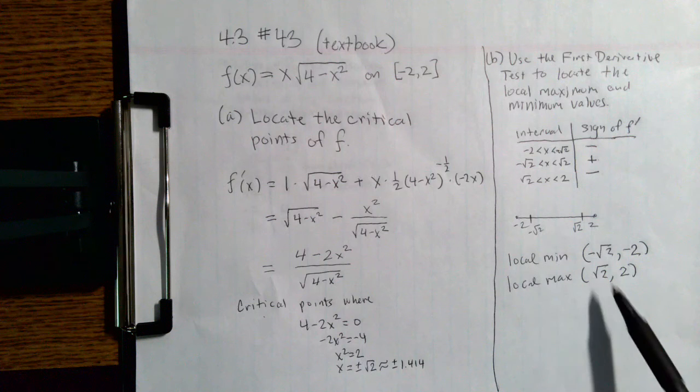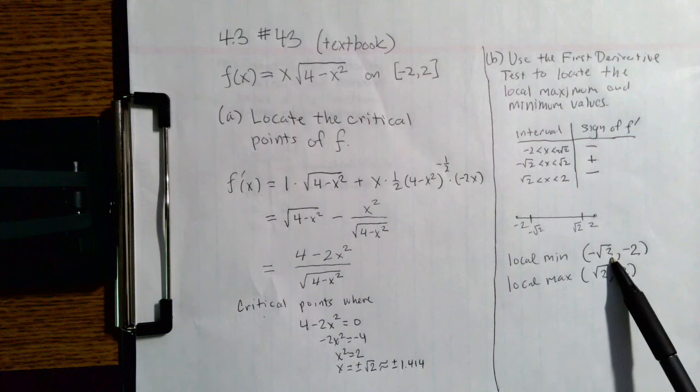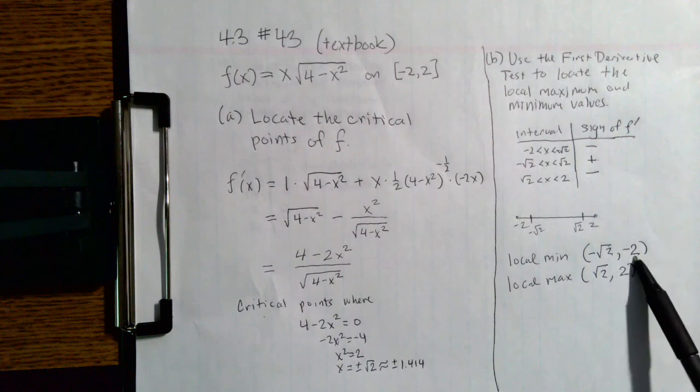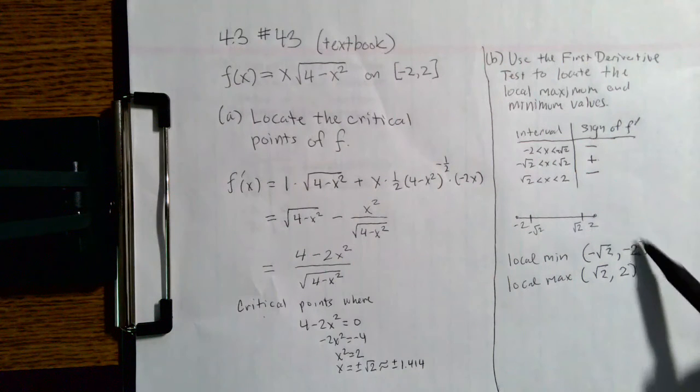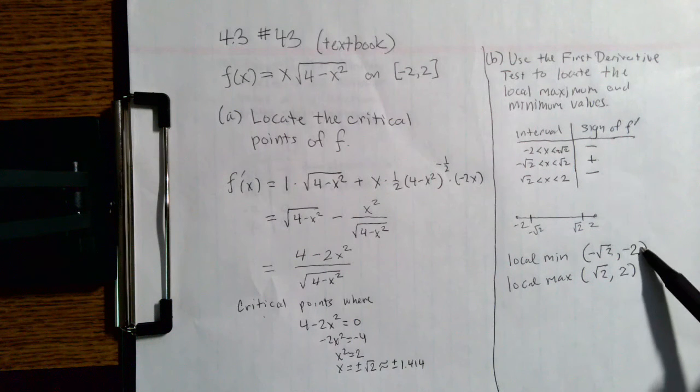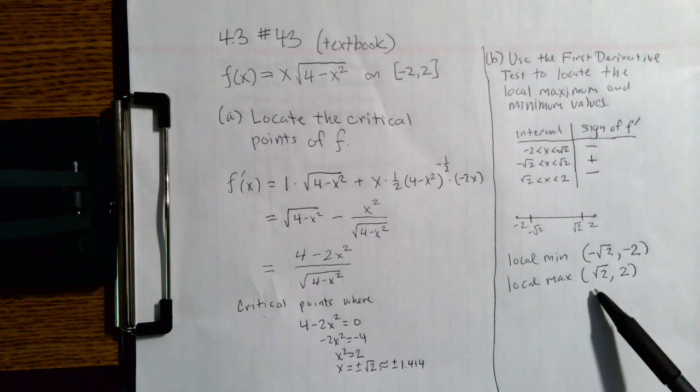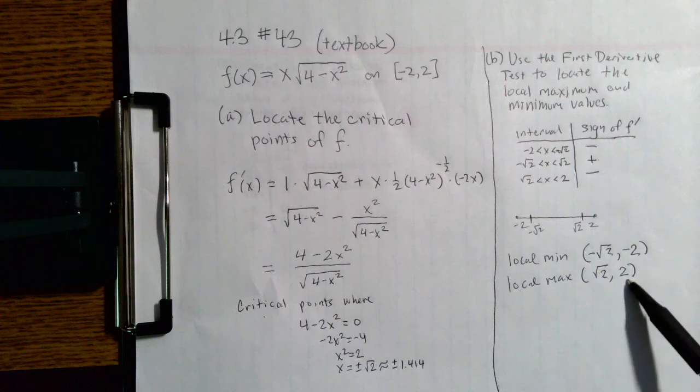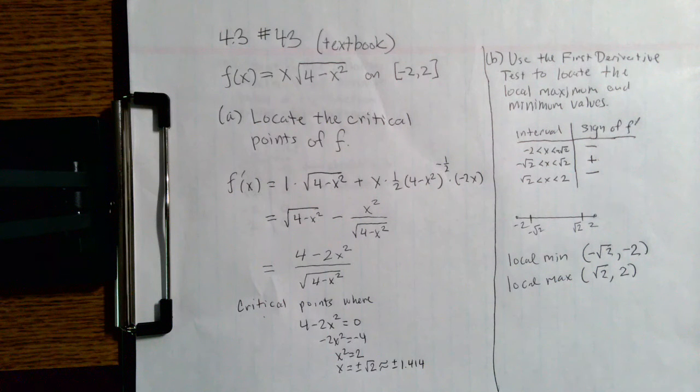Our local minimum occurs at negative square root of 2. The y-coordinate, which we get by plugging into the original function, is negative 2. The local max occurs at the square root of 2, and that y-coordinate is positive 2.